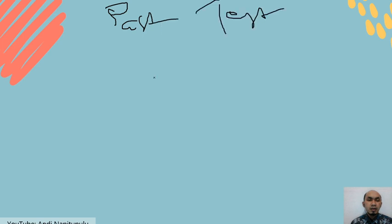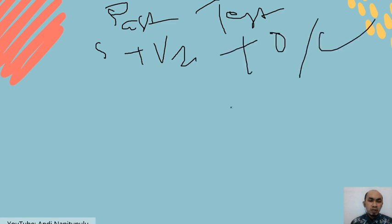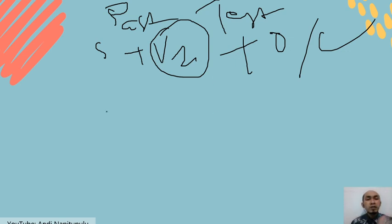Simple past tense talks about past events. The formula is: subject + verb 2 + object or complement. The function of simple past tense here is to explain what's happening in the movie.